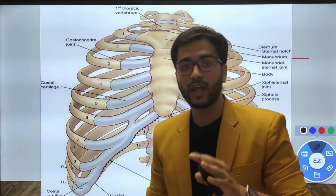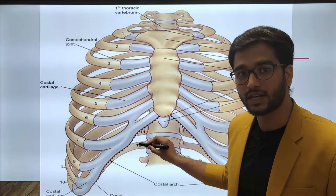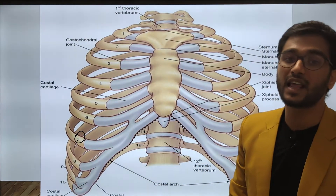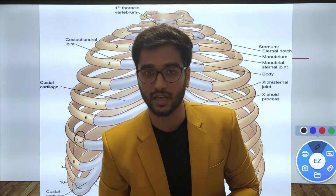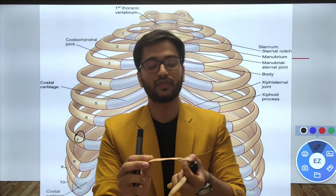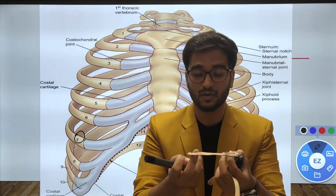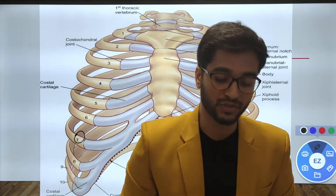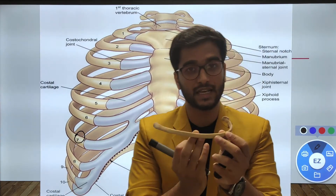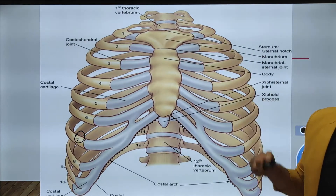There are 12 pairs of ribs. Among them, the first 7 ribs are directly attached to the sternum anteriorly. Ribs 8, 9, and 10 are indirectly attached via the 7th rib, and the 11th and 12th are floating ribs, which are non-jointed anteriorly. All 12 ribs are articulated with the vertebra posteriorly. The first rib, also known as the cervical rib, is oriented horizontally giving superior and inferior surfaces and anterior and posterior borders, while the remaining ribs are in a vertical position giving anterior and posterior surfaces with superior and inferior borders.